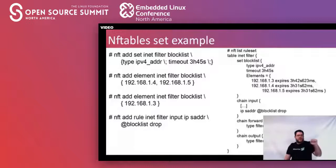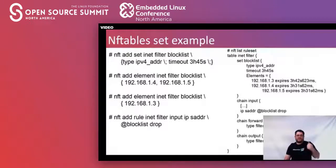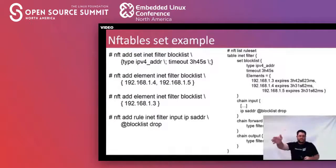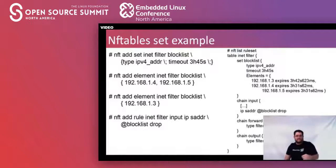Quick example: I've got a block list here of IP addresses I do not want accessing anything on my network. We set up a block list, and anything added to that block list times out after three hours and 45 seconds. Once an IP address is put in there, there's a timestamp, and once that timer exhausts, it is actually removed from the list automatically. IP set has a very similar mechanism, but NF tables already has this built in really well. The rule set on the right is how you would actually reference that list — and that's just a dump; that's 'nft list ruleset', which is exactly what the firewall was seeing.